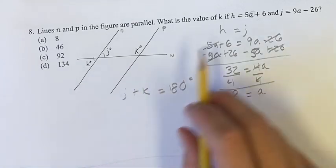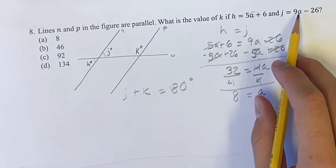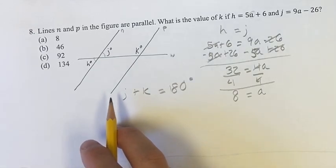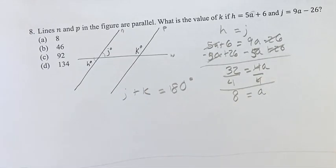And so we know what j is going to be. j is 9a minus 26. And we can find out what that is now that we know what a is. And then we have to subtract that from 180, and that'll give us k.